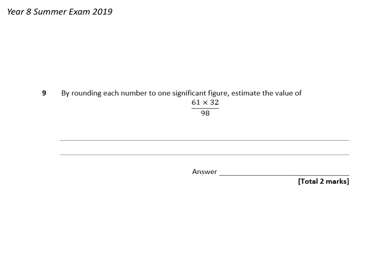So we know that whenever we're asked to estimate, and we notice the word here, we then have to do our rounding to one significant figure. So we're going to take each of one of these numbers and round it to one significant figure.